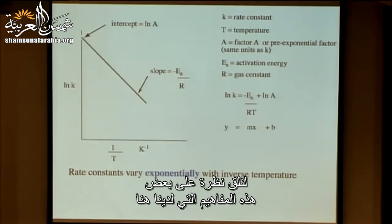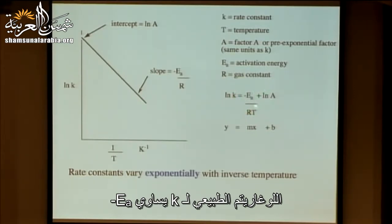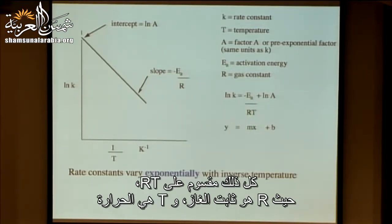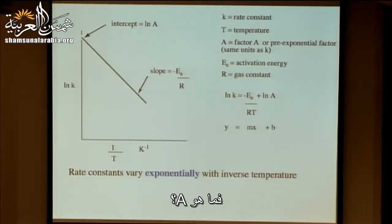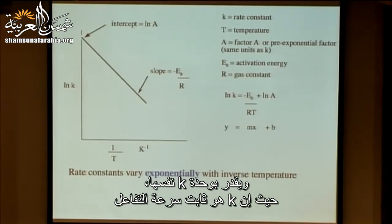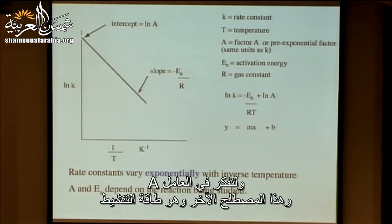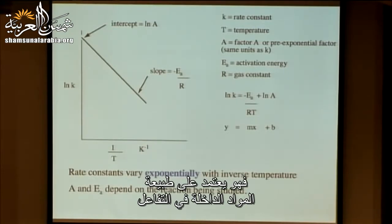Here is the equation for the straight line: the natural log of K equals minus Ea over RT, plus the natural log of A. Ea is activation energy, R is the gas constant, T is temperature. A is called factor A or the pre-exponential factor, and it has the same units as K, the rate constant. Factor A and activation energy depend on the reaction being studied — they depend on the nature of the materials involved.